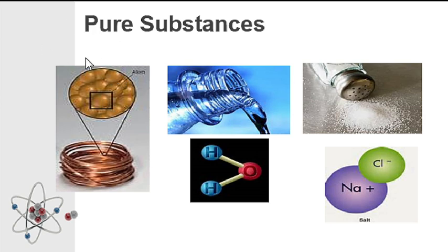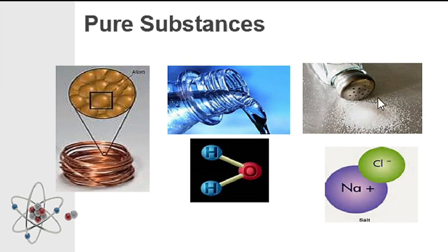Here are examples of pure substances. Copper wire — all the atoms inside the copper wire are the same, with nothing mixed in. Water — its composition is two hydrogen atoms and one oxygen atom, no matter how much water there is. Salt — Na and Cl. So water and salt are compounds, and copper wire is an element. All of them are pure substances. They cannot be separated by physical means; pure substances are separated by chemical means.